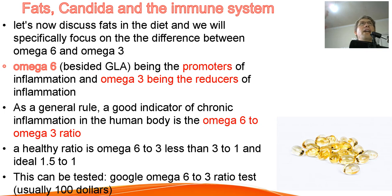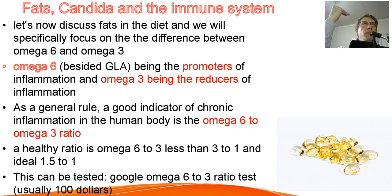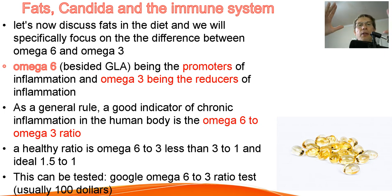Let's now discuss fats, candida, and the immune system. We need to introduce two different categories of fatty acids: omega-6 and omega-3. As a general rule, omega-6 — with the exception of GLA — are promoters of inflammation, while omega-3 are reducers of inflammation. In your journey to avoid chronic inflammation from your diet, you really want to pay attention to the omega-6 to omega-3 ratio. When that ratio is in balance, chronic inflammation from your diet is not present.